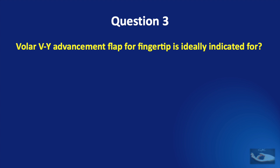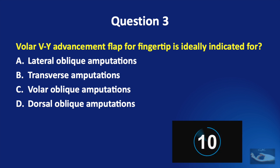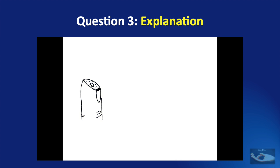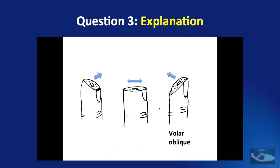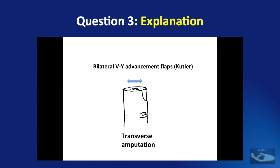Question number three: the volar V-Y advancement flap for fingertip is ideally indicated for lateral oblique amputations, transverse amputations, volar oblique amputations, or dorsal oblique amputations? The correct answer is the volar V-Y advancement flap for fingertip is ideally indicated for dorsal oblique amputations. The orientation of the amputated fingertip is of three types: the dorsally facing or dorsal oblique amputation, the transverse amputation, and the volar oblique amputation. The dorsal oblique amputation is the ideal defect for the volar V-Y advancement flap, whereas the transverse amputation is the ideal indication for the bilateral V-Y advancement flaps of Cutler.